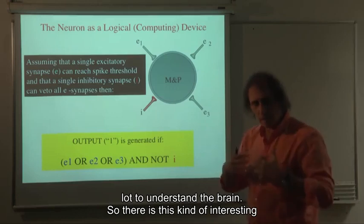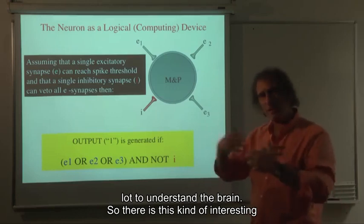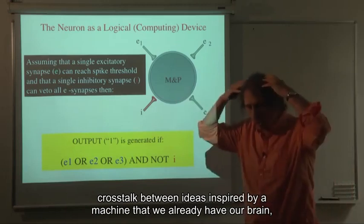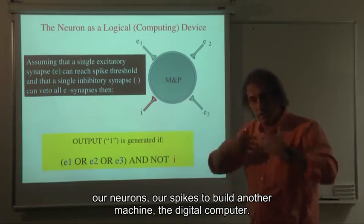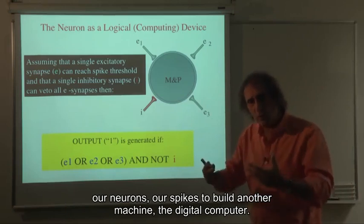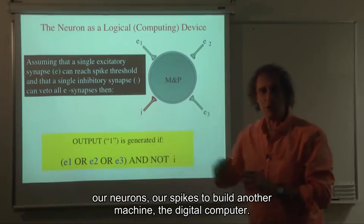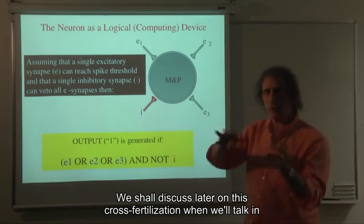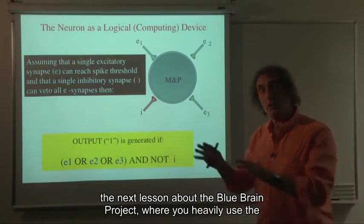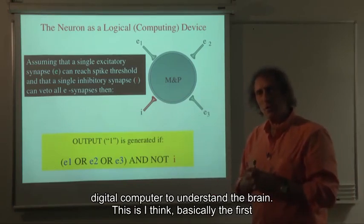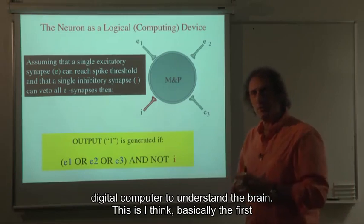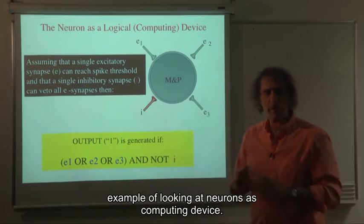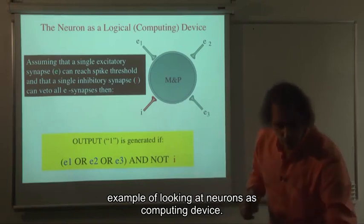And so the brain helped, already then, to inspire another machine, the computer, the digital computer. Of course today the computers help us a lot to understand the brain. So there is this kind of interesting crosstalk between ideas inspired by a machine that we already have, our brain, our neurons, our spikes, to build another machine, the digital computer. We shall discuss later on this cross-fertilization when we talk in the next lesson about the Blue Brain Project, where you heavily use the digital computer to understand the brain. But this is basically the first example of looking at neurons as a computing device.